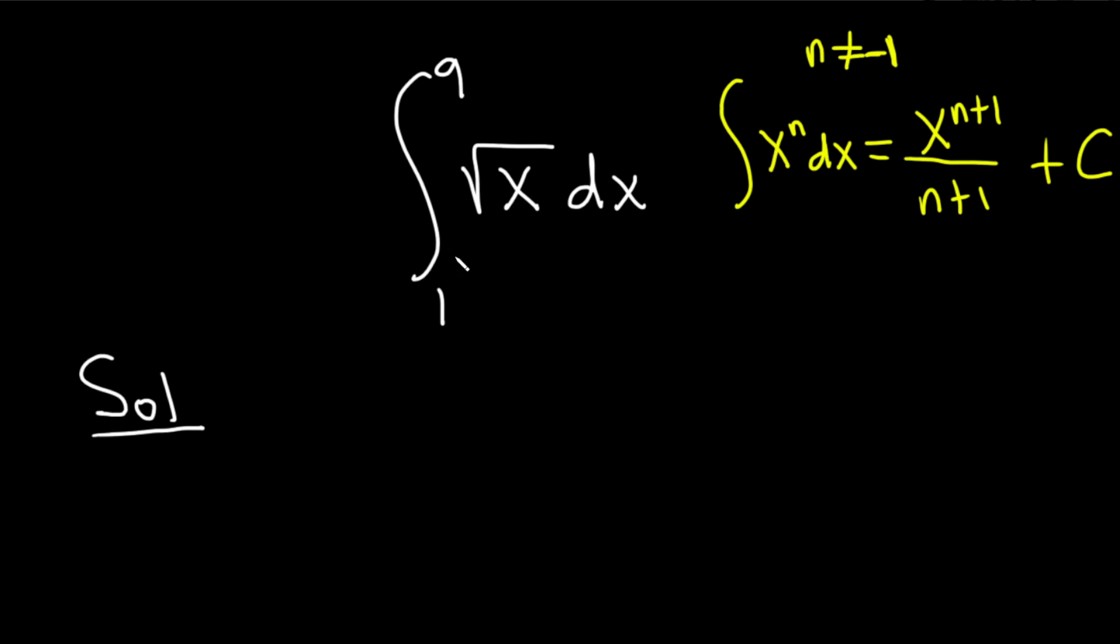Now this is a definite integral so we don't need to add the plus C because when we end up subtracting after integrating, the C's will just cancel so it doesn't matter. So we first have to write this in a way that allows us to use this rule.